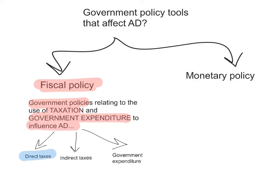Fiscal policy includes direct taxes — taxes on income, wages, rent, profits, or interest — as well as indirect taxes, which are taxes on spending when governments pass taxes on the sales of goods and services, and government expenditure. If the government wants to increase aggregate demand, it could lower direct and indirect taxes and raise government expenditure, which will shift the aggregate demand curve to the right. Conversely, to reduce aggregate demand, it could increase taxes and lower government expenditure, shifting the aggregate demand curve to the left.